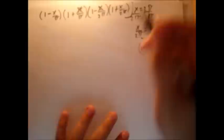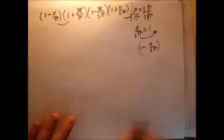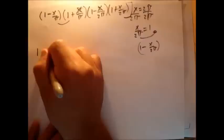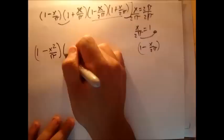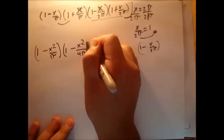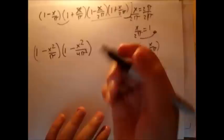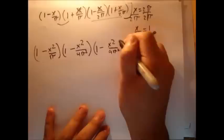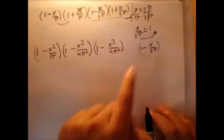He grouped these paired terms together. Since each pair has one negative and one positive term, when you multiply them the middle term cancels. So the first pair gives 1 minus x squared over pi squared; the second pair gives 1 minus x squared over 4pi squared; the third gives 1 minus x squared over 9pi squared, and so on.